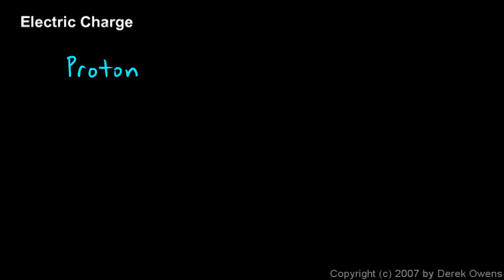There are two types of electric charge: positive and negative. Protons are positively charged and electrons are negatively charged. Let's write this into the notes. A proton — sometimes drawn with a little plus sign on it — is positively charged.